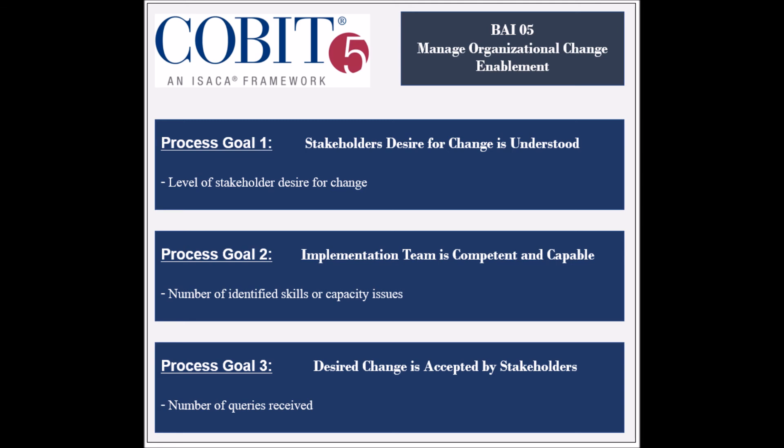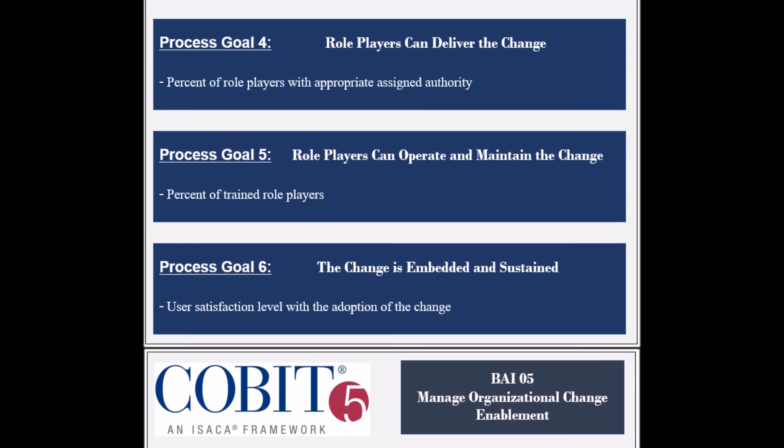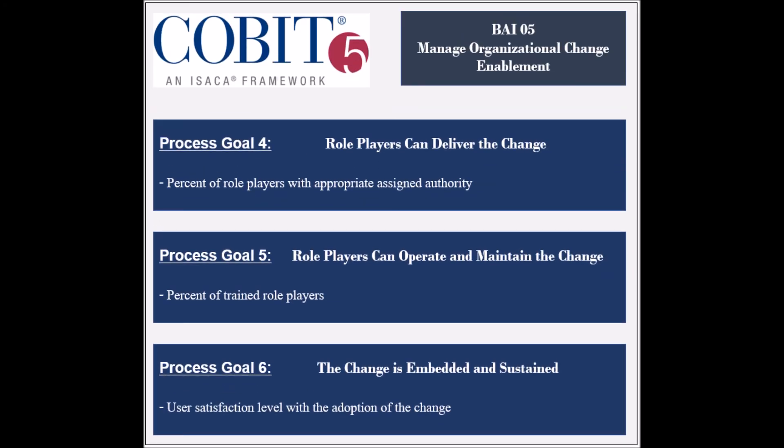The third process goal is to ensure that the desired change is accepted by the stakeholders, and its achievement is measured by the number of received queries. The fourth goal is to ensure that role players can deliver the change, and its achievement is measured by the percent of role players with appropriate authority.